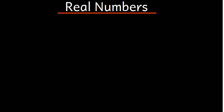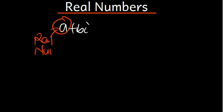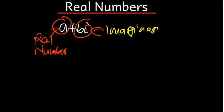We are first going to talk about complex numbers. We know that complex numbers are made up of two parts: a real part and an imaginary part. For example, if we have A plus Bi, we know that A is the real number and Bi is what we call the imaginary number. So we want to focus on real numbers.